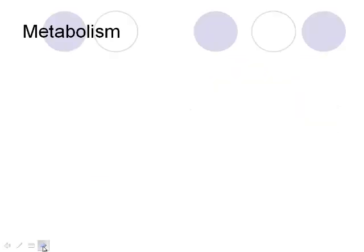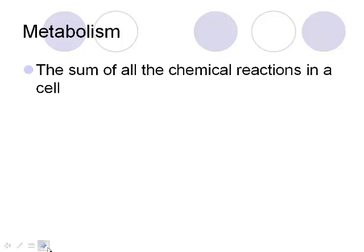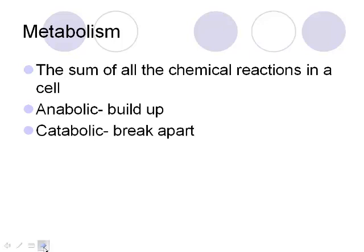So metabolism — basically what it is — is the sum of every chemical reaction that happens in our cell. All these chemical reactions need a specific little jump start to get going, otherwise they take forever. There are a couple different types of reactions we can talk about: anabolic and catabolic.